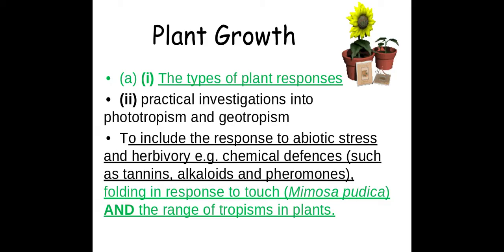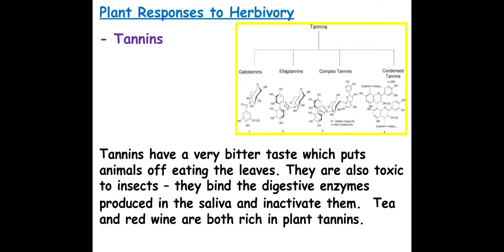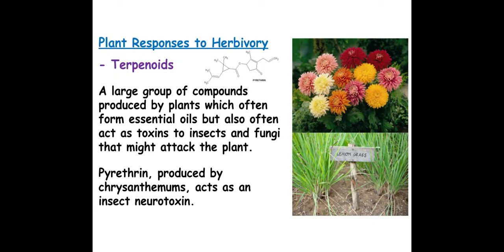Now we'll look at chemical defences. Alkaloids are very bitter tasting — things like caffeine or nicotine. Most alkaloids are toxic to other organisms: caffeine is toxic to fungi and insects, and nicotine is toxic or poisonous to many insects. Tannins also have a very bitter taste to put animals off eating leaves, and are toxic to insects as well. Terpenoids are produced by plants which often form essential oils, and these act as toxins towards insects or fungi to stop them from eating those plants.